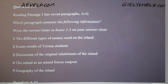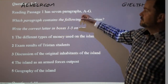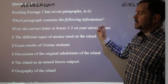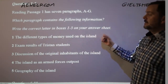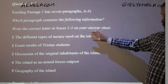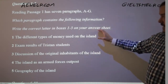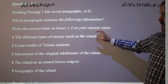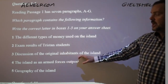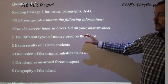Now let's take a look at the questions, because they'll give us a little bit more insight. The instruction reads: Read passage one — it has seven paragraphs, A to G. Which paragraph contains the following information? Write the correct letter in boxes one to five on your answer sheet. Each of these statements is found somewhere in the passage, and our task is to identify which paragraph contains a specific piece of information.